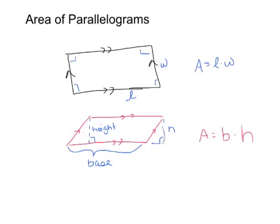So the height in this case is not going to be a side times a side. It's going to be the base times the perpendicular height. So what does this mean?